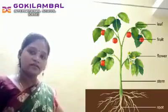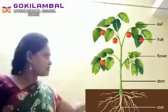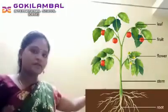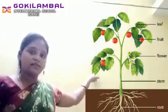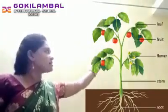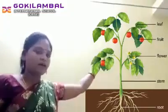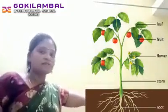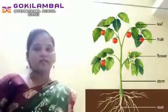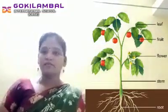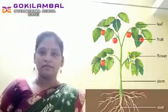What is this? Root. This is stem. This is leaf. This is flower. This is fruit. These are the parts of the plant.